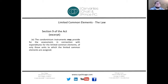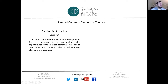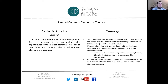Section 9 of the Condominium Property Act is where we generally talk about assessments, money, and budgets for the association. That section contains paragraph (e), which says that in the event the declaration or bylaws provide that costs associated with limited common elements may be charged back to the owners, then that can happen. It is not a default provision — there has to be authority under the condominium instruments stating that. The default is costs are not charged back unless there is a provision authorizing it.